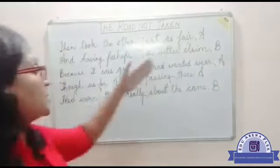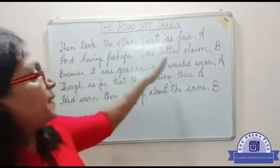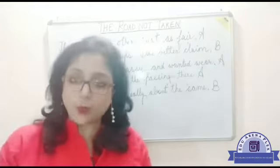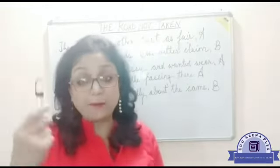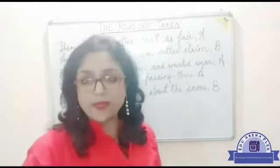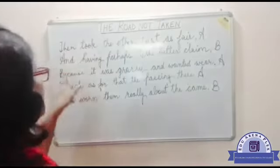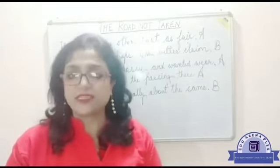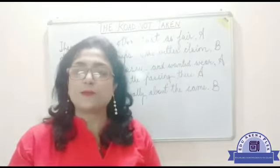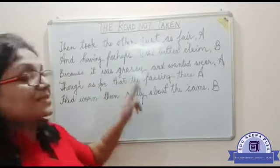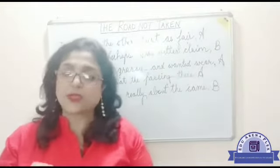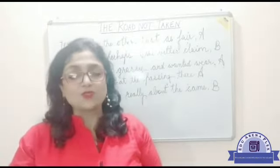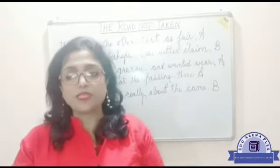He wanted something just as fair, so he thought the other direction may be a good one — maybe having perhaps the better claim. He thought the other path may be better because it was grassy and wanted, meaning it hadn't been used much by people, so he thought it would be a better option.